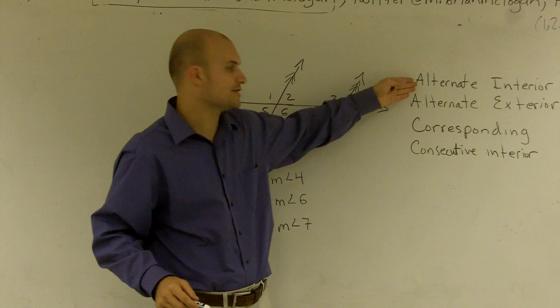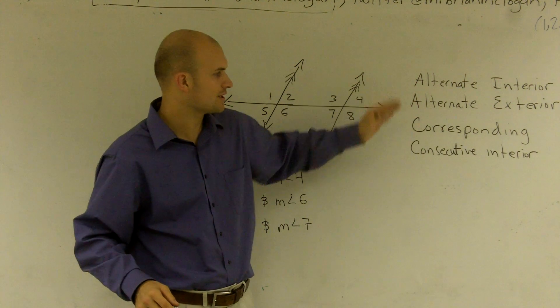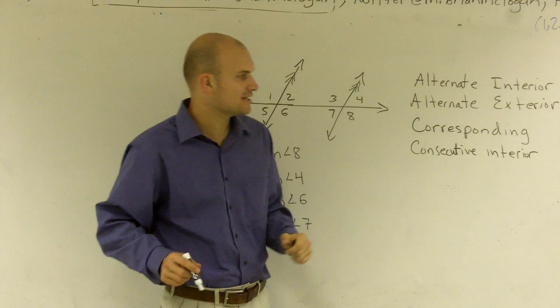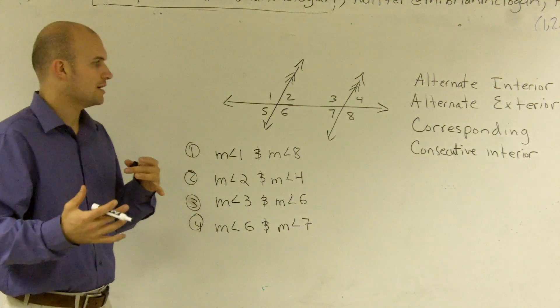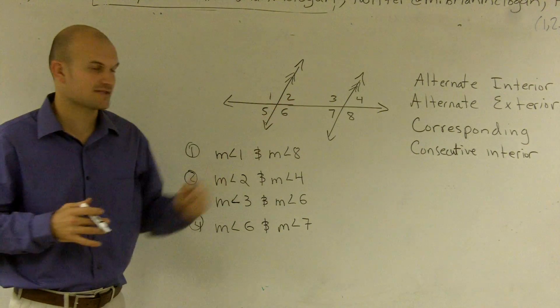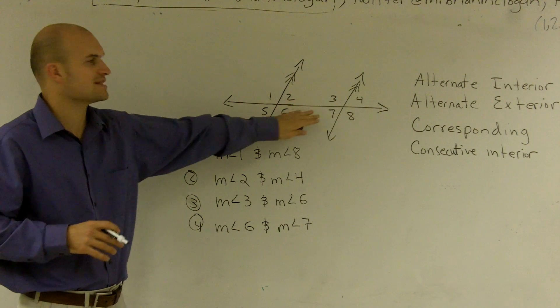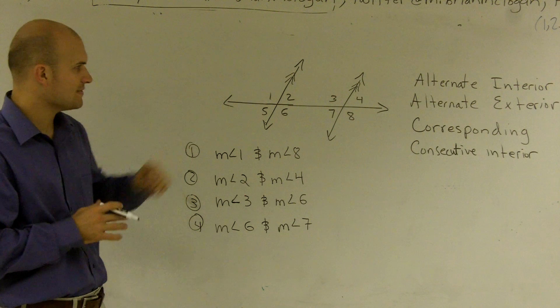The first one is alternate interior, alternate exterior, corresponding, and consecutive interior. So those are four different types of angles that we're going to look to see how we can describe them using this figure. So each one of these numbers represents an angle on this figure.